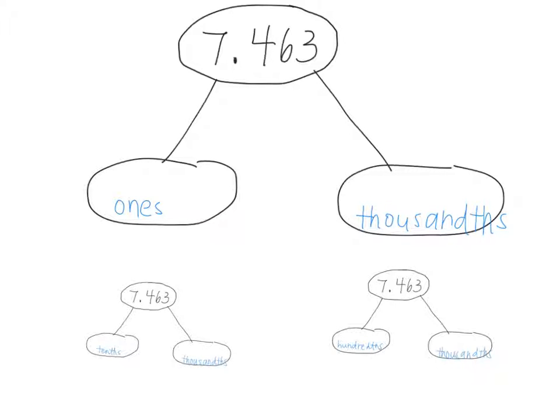Now, how do we say this number in word form? Sherilyn? 7 and 4, I'm thinking it's 63 thousandths. Yeah, we say this is 7 and 463 thousandths, because the right most place value is thousandths place, right? So what if I want to break it up into ones and thousandths? How many ones do I have? Seven. Go ahead and write that down. And how many thousandths do I have? 463.